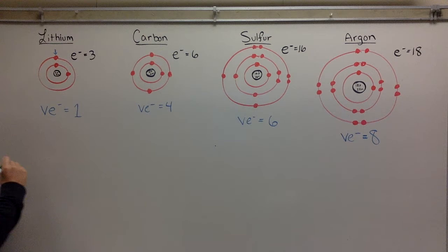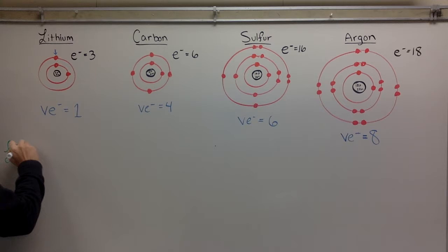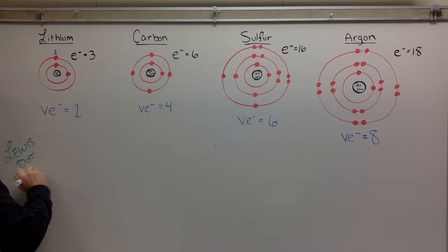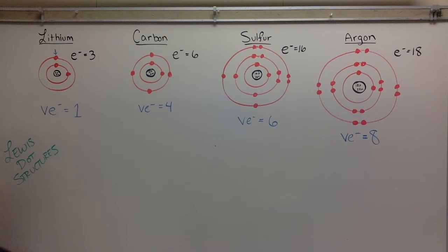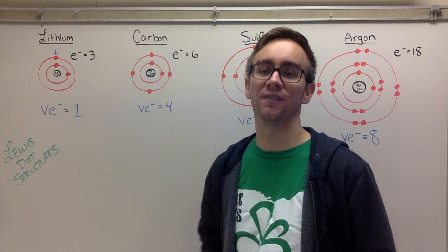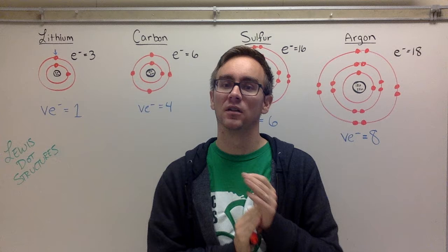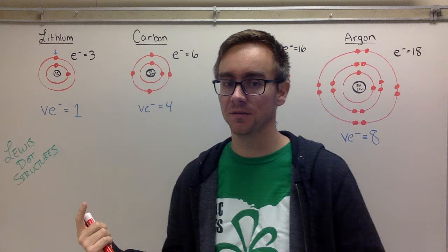We're going to draw what we call Lewis dot structures. All I'm going to do is turn each one of these into a Lewis dot structure. If all we really care about at the moment is the number of valence electrons, because those are the ones that are going to interact first - not that the other electrons aren't important, it's just that these are the ones we're going to be talking about. They're kind of at the front of the line, the outside, the outer barrier. Let's simplify this.